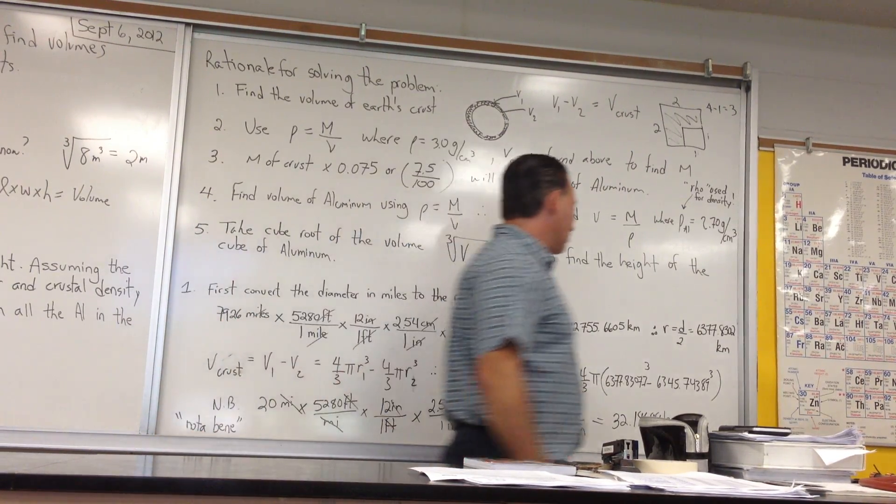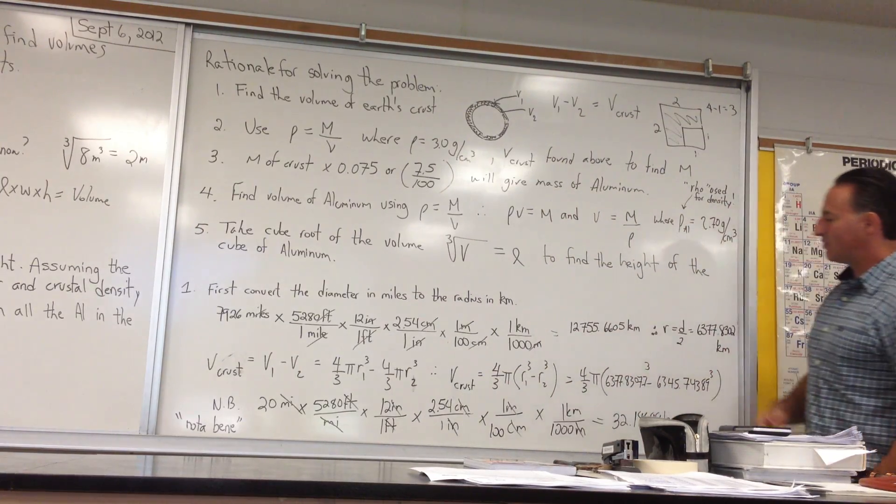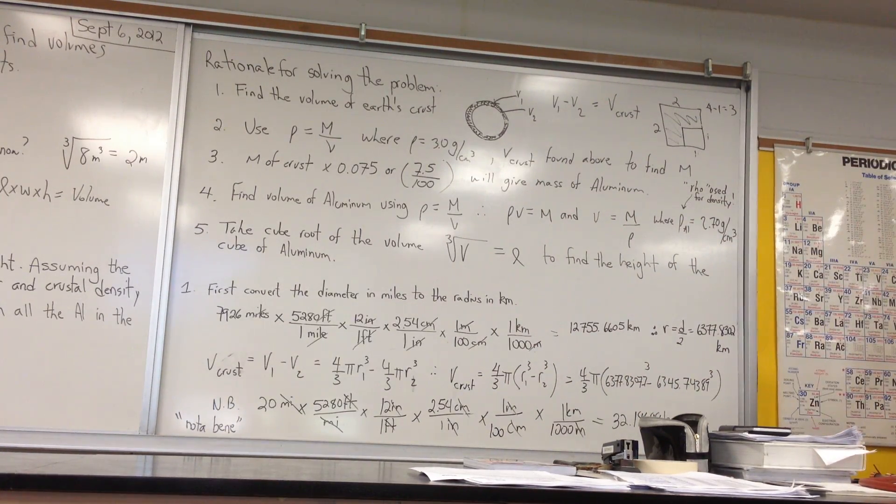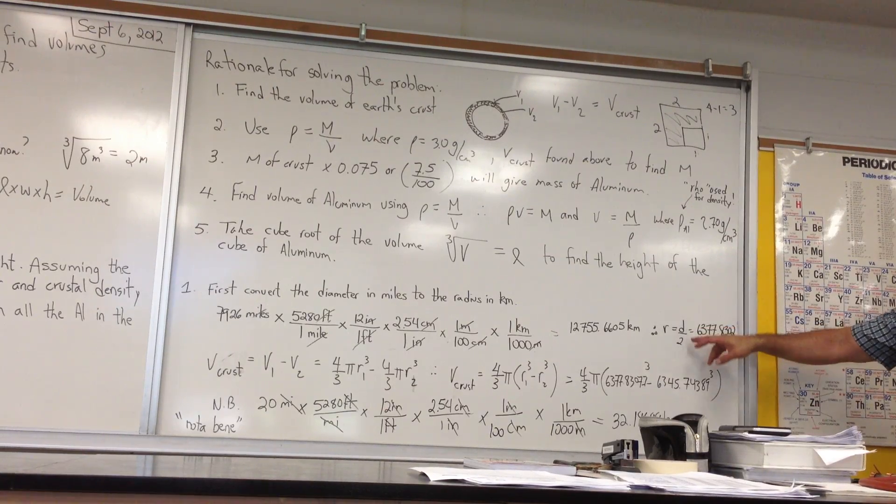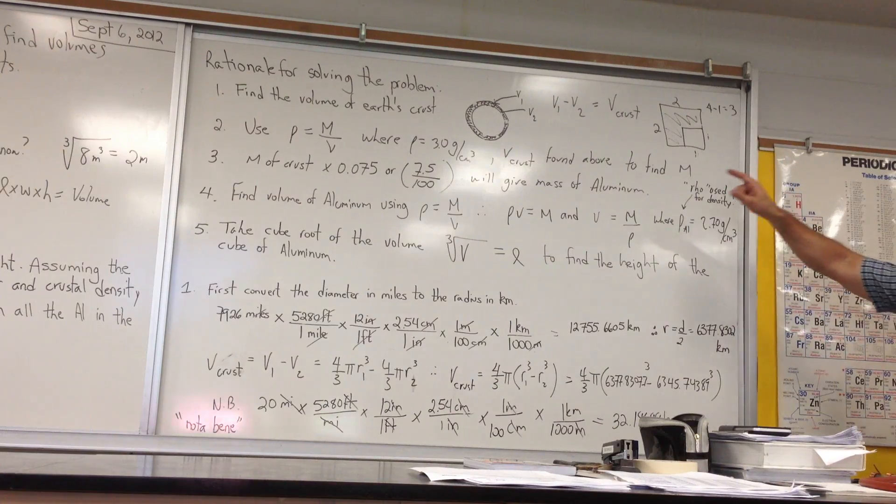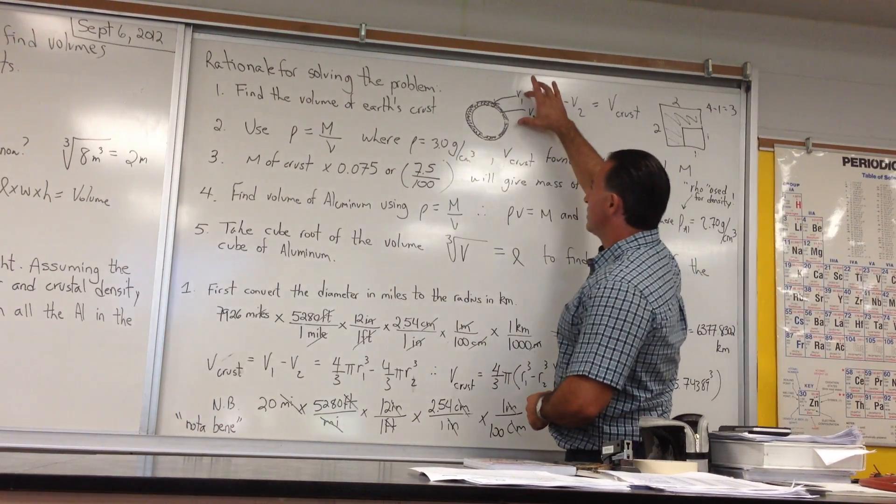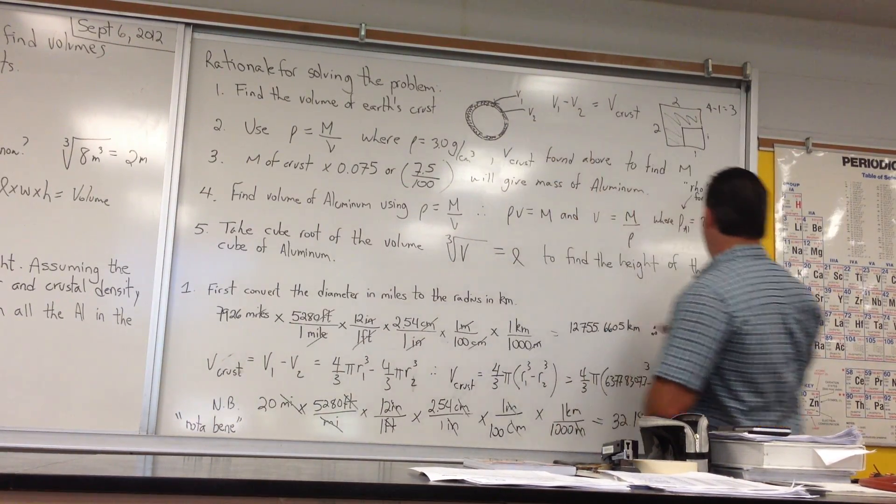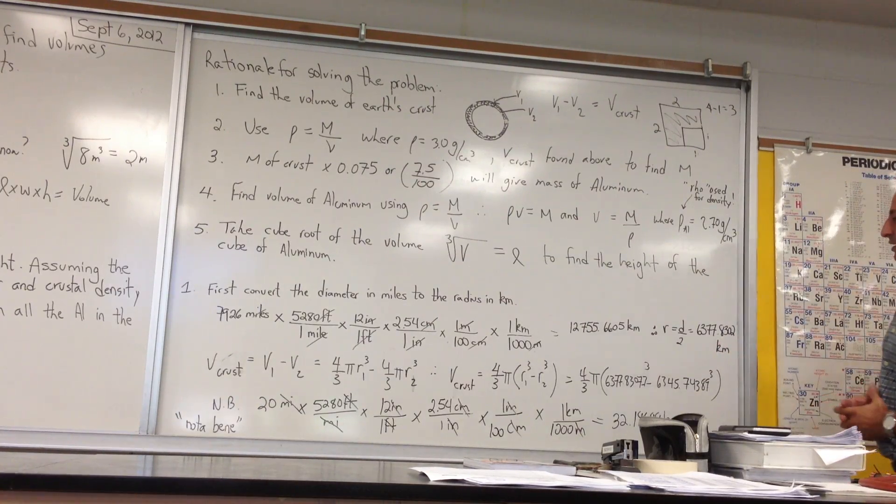So the Earth's diameter in kilometers is 12,755.6 kilometers. We know that a radius is half of the diameter, so we divide our diameter by 2, and we get the radius of the outer shell. The radius that's going to give us V1 is 6,377.8 kilometers.